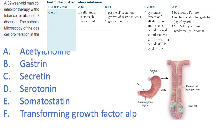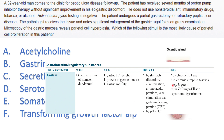The other answer choices don't apply. Acetylcholine increases acid secretion but wouldn't cause growth of the gastric mucosa. Secretin increases pancreatic secretions. Serotonin increases motility — nothing to do with this. Somatostatin is an inhibitory hormone that inhibits everything, including gastric acid secretion and pancreatic secretions — so that doesn't apply. Transforming growth factor alpha relates to epithelial cell growth but doesn't apply here. Literally this question is a freebie if you know gastrin's actions.